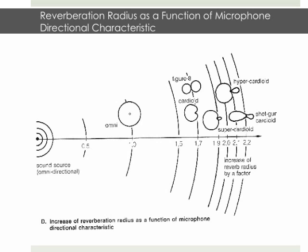And the same thing for the other ones. You can see all the other types of microphones in there. Figure eight is more or less the same as the cardioid, but if you have anything that is like a super cardioid, hyper cardioid, or shotgun, you have to go further away, increase the reverberation radius by that factor.